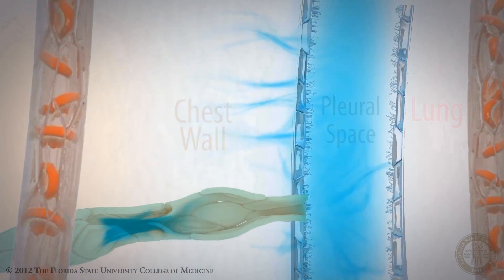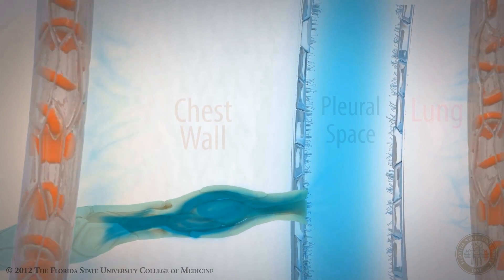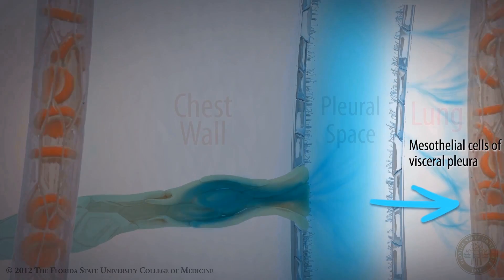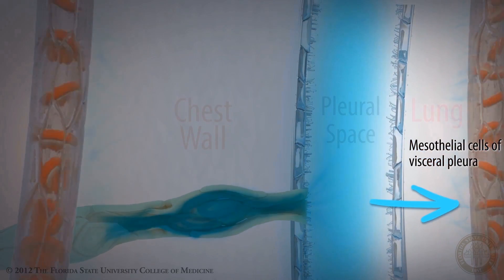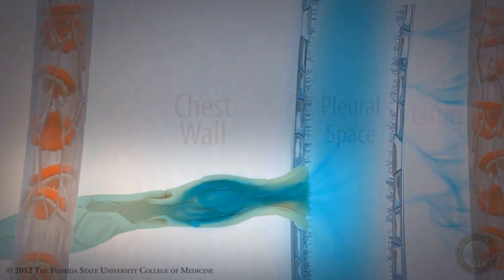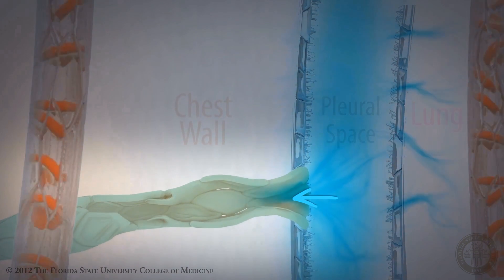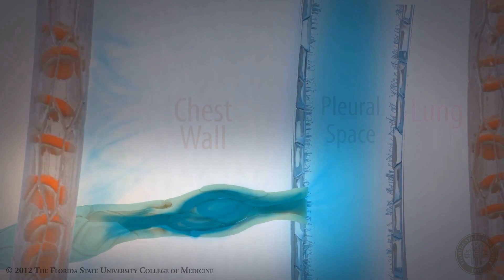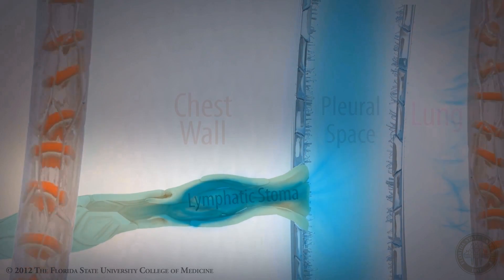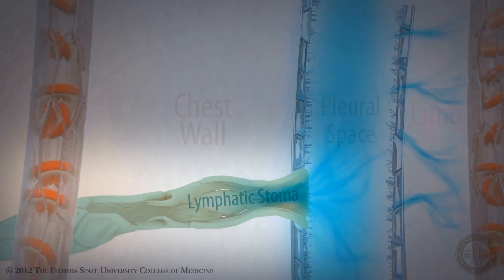How is pleural fluid absorbed? Pleural fluid is primarily absorbed through the mesothelial cell layer of the visceral pleura. Fluid also exits the space through microscopic unidirectional valves that are in the parietal pleura, known as the lymphatic stoma. These lymphatic stoma are really only found on the parietal pleura.